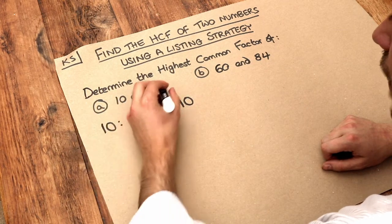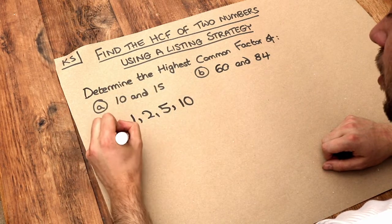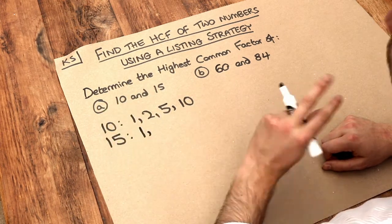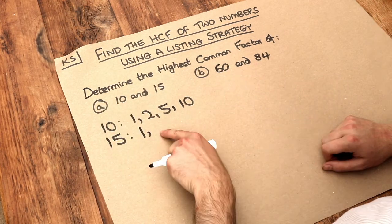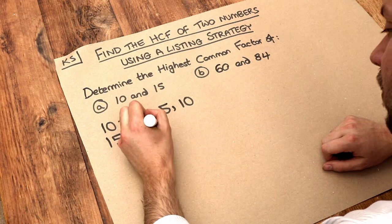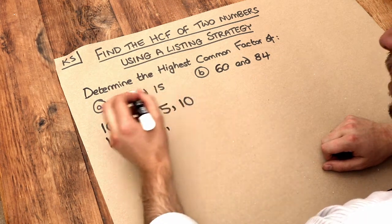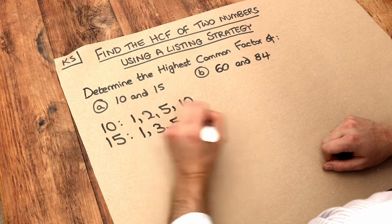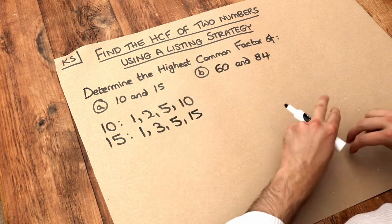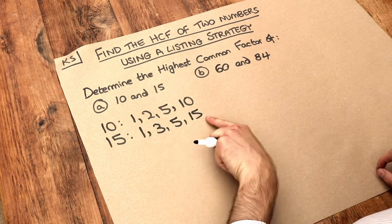What about the factors of 15? So if we list out those: Well, 1 is a factor of 15. One is a factor of every number. You can't divide 15 by 2. You can divide by 3. You can divide it by 5. And you can divide it by itself. So these are the factors of 10. These are the factors of 15.